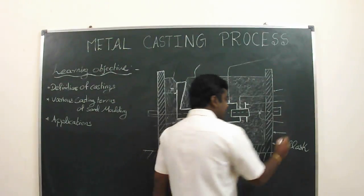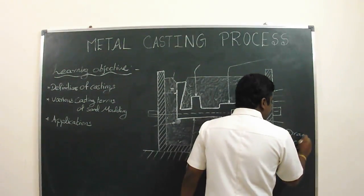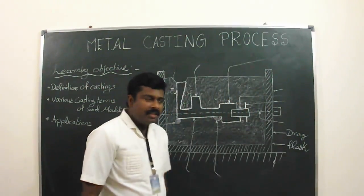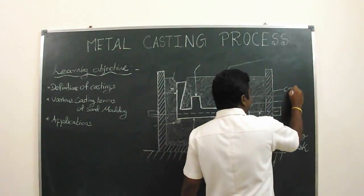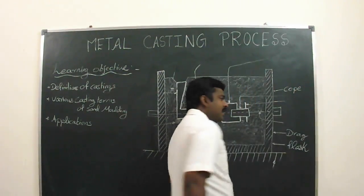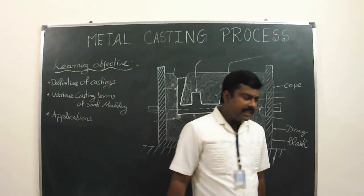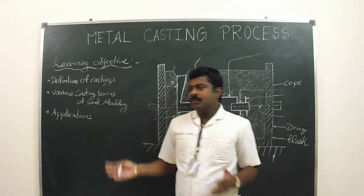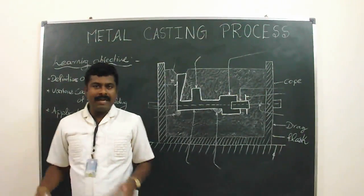This one is the drag box. Drag is the lower molding flask. And this one is the cope box. Cope is the upper molding flask. Another one is the cheek. Cheek is the intermediate molding flask which is used for three-piece pattern.